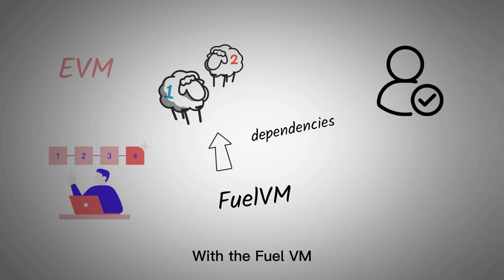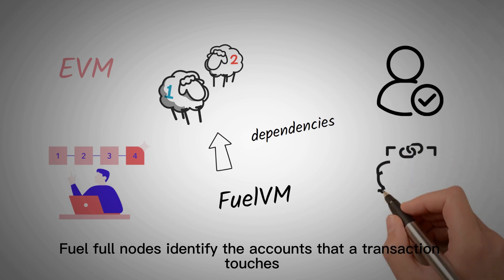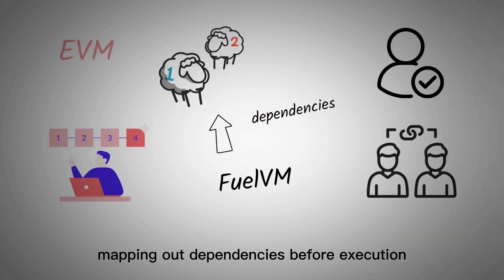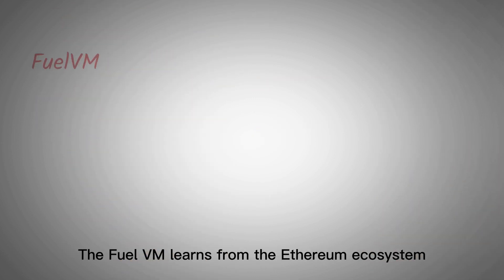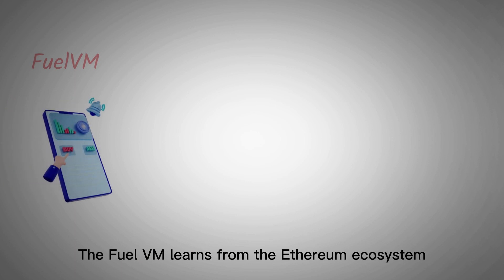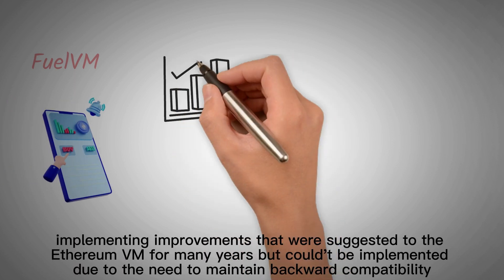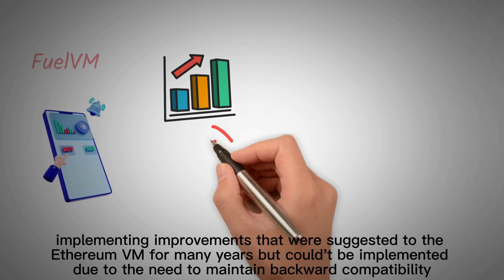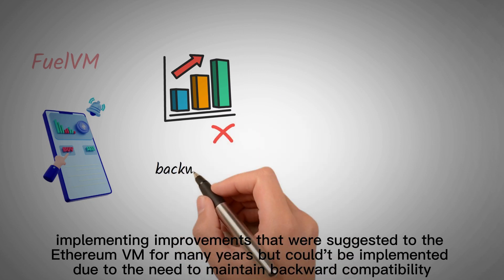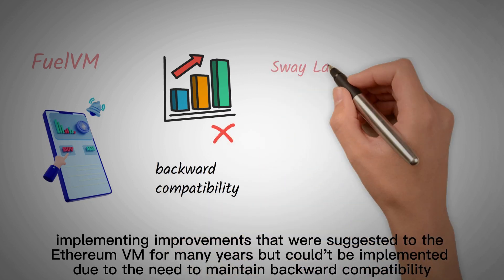With the Fuel VM, Fuel full nodes identify the accounts that a transaction touches, mapping out dependencies before execution. The Fuel VM learns from the Ethereum ecosystem, implementing improvements that were suggested to the Ethereum VM for many years, but couldn't be implemented due to the need to maintain backward compatibility.